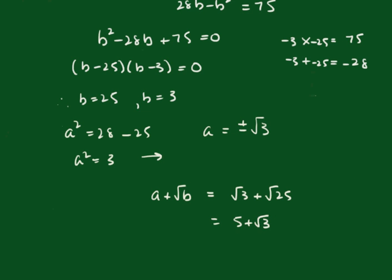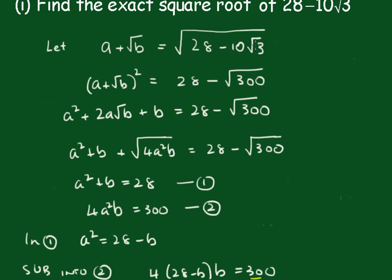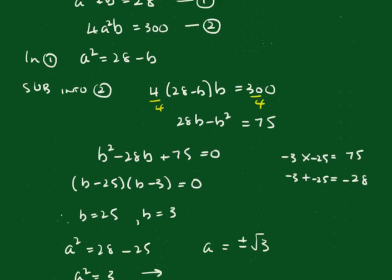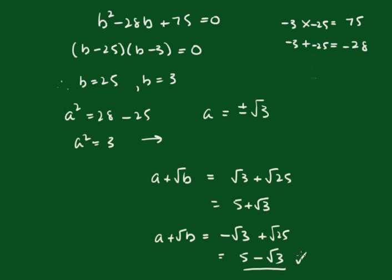Clearly it can't be the positive case — root 3 plus 5 — because you'd be adding rather than subtracting; you can check it yourself and see it'll be nowhere near the target. So we take the minus case: a plus root b equals minus root 3 plus root 25, giving us 5 minus root 3. If you check that you'll find that is the correct solution: 5 minus root 3.